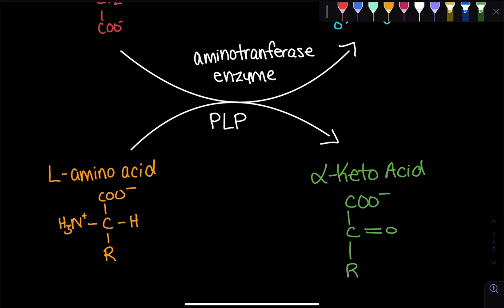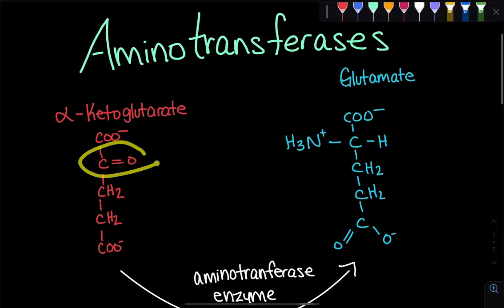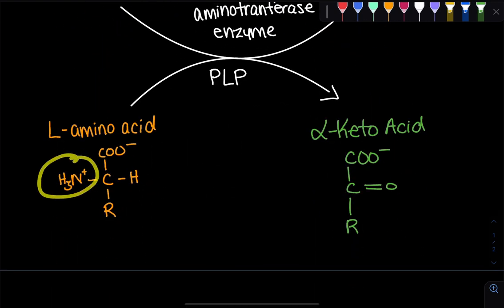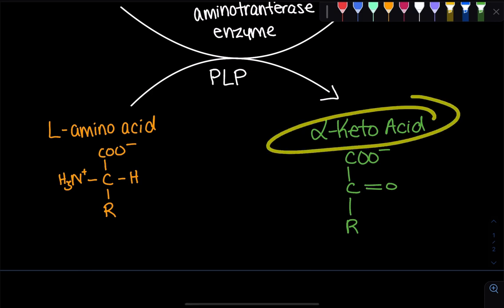So this amino group on the amino acid is going to be transferred onto the alpha-ketoglutarate and it's going to yield glutamate. If this L-amino acid loses that nitrogen, it's going to form this double-bond to oxygen and it's going to form an alpha-keto acid.